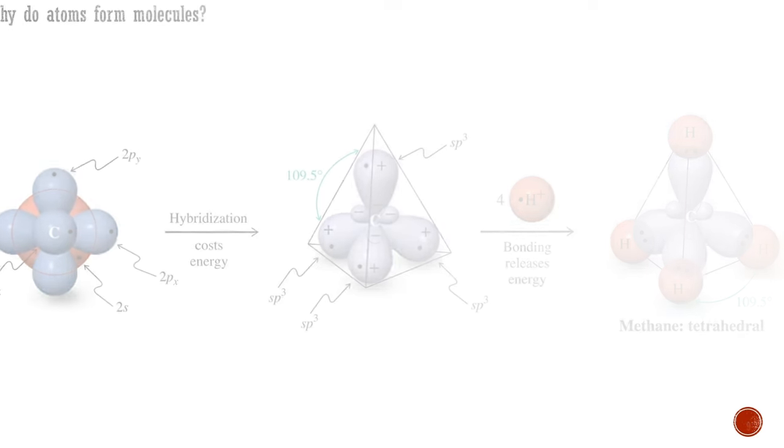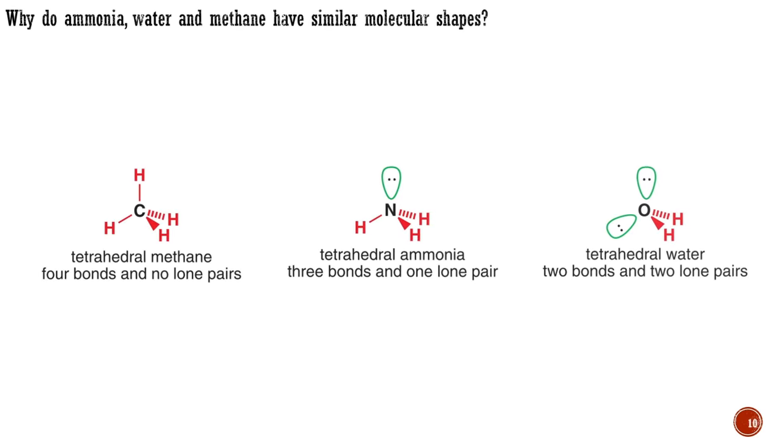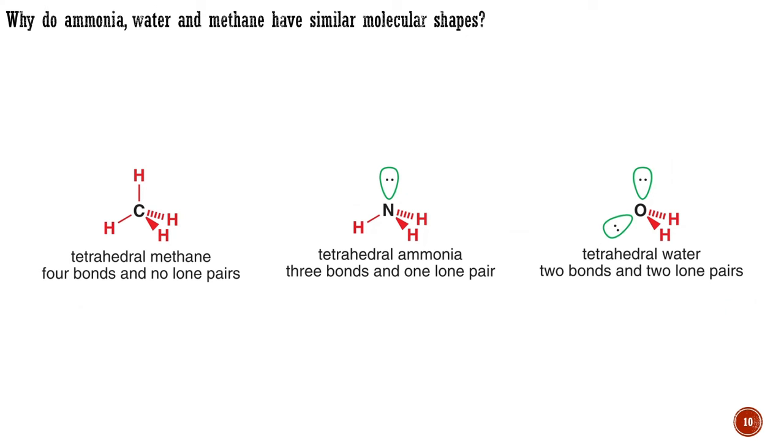Ammonia and water also have 10 electrons in total, and we know that their molecular shapes are, in fact, just like that of methane, but with one or two hydrogen atoms removed. This tells us something important. It is the number of electrons that determines the shape of a molecule, not just the number of atoms or atomic nuclei.